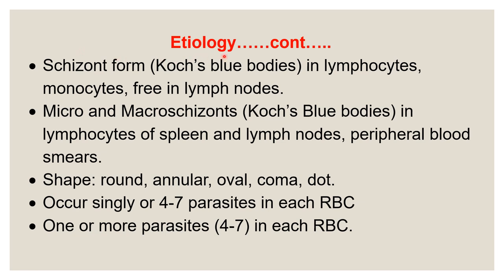Continuing etiology: besides the erythrocytic form, there is another form called the schizont form, also known as Koch's blue bodies. When the slide is stained with Giemsa stain, large blue-colored bodies are seen — called Koch's blue bodies — which are schizonts found in lymphocytes, monocytes, and sometimes free in lymph nodes. Schizonts are of two types: micro-schizonts and macro-schizonts, and they are called blue bodies.